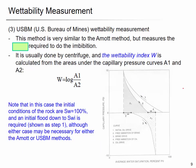The third measurement method is called the USBM — US Bureau of Mines — wettability measurement. This method is very similar to the Amott method but measures the energy required to do the imbibition. They look at the area ratio A1 over A2.